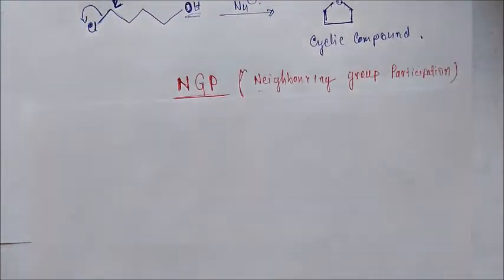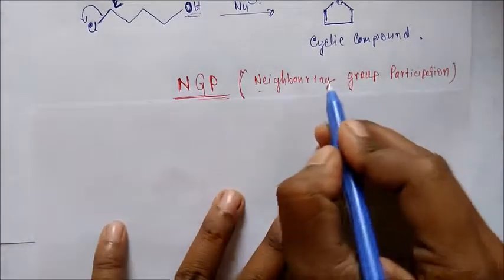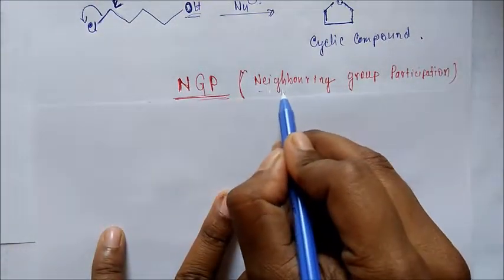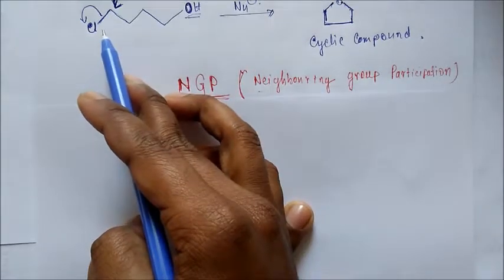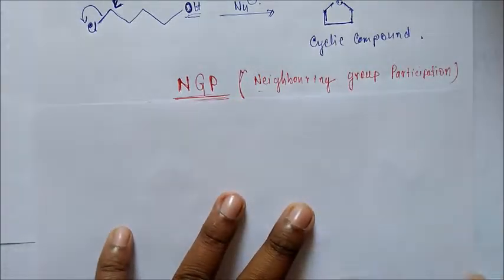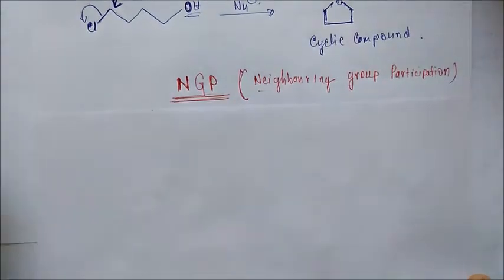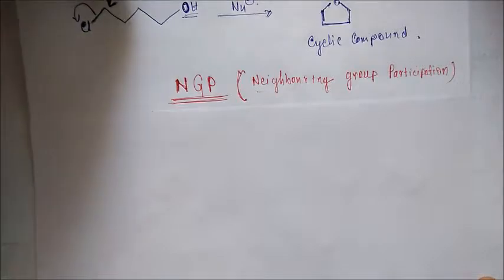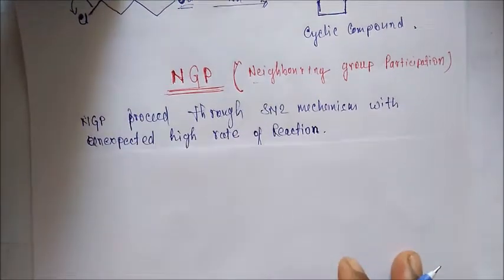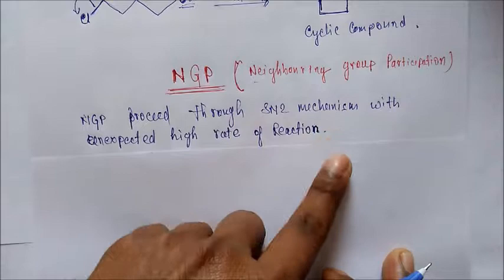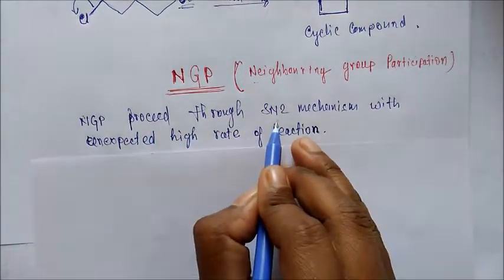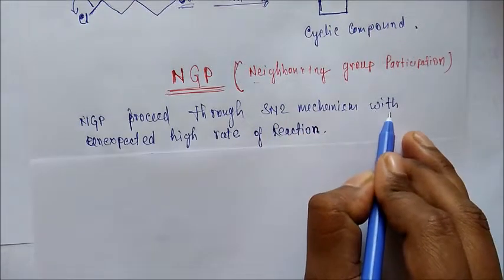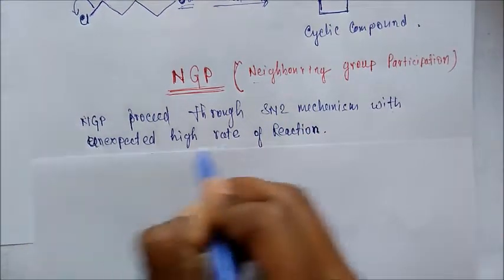The next topic, also part of intramolecular SN2, is NGP — Neighboring Group Participation. From the name itself we can sense that the nucleophile and leaving group are both on the same substrate. NGP proceeds through the SN2 mechanism with an unexpectedly high rate of reaction.